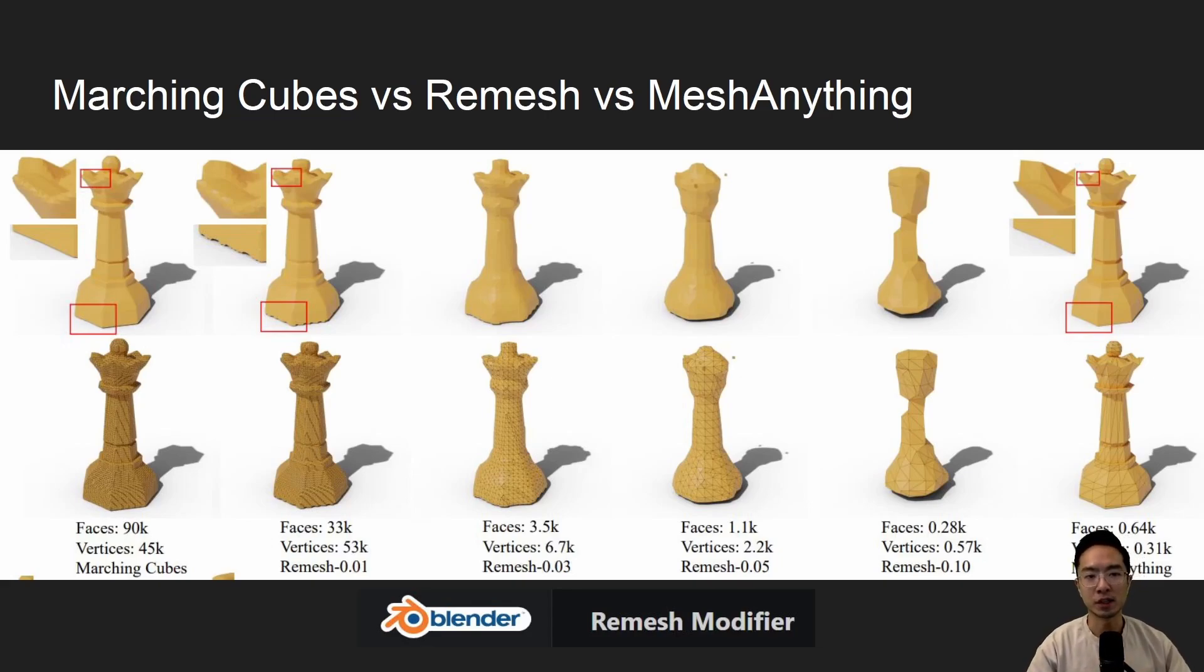So Marching Cubes versus Remesh versus Mesh Anything. So remesh here is part of Blender that helps you remesh your mesh. So you can see here on the first column, we're dealing with Marching Cubes. So Marching Cubes here, you see that we're dealing with 90,000 faces. So you can see that there's a lot of details, but there's some issues as you can see here when you try to remesh it. So here when you try to remesh it, you see that there's some bumpy surfaces that's happening here. And remeshing, the point of that is to reduce the number of faces. So you can see we're going down to 33, 3.5, 1.1, and then 0.28.